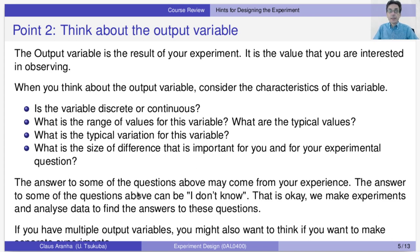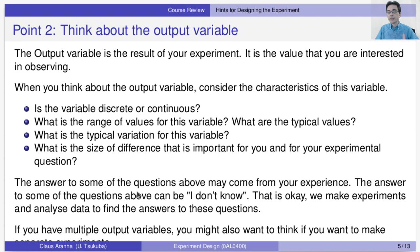The answer to some questions may come from your experience, or the answer may be 'I don't know' — and that's okay, because that's why you're doing an experiment; maybe you're making it to learn more about the behavior of your output variable. If you have multiple output variables, think about whether to do one experiment or multiple. In this class we mostly dealt with one output variable, so if you have two you probably want to do two experiments, though statistical methods for multiple output variables exist.